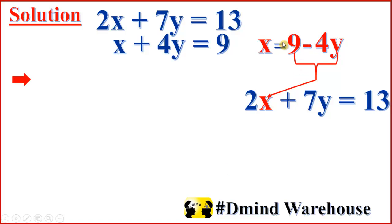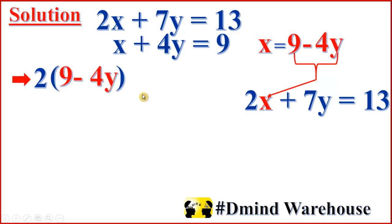Now, in place of x, we can substitute 9 minus 4y instead of x. That means 2 times (9 minus 4y), because x equals 9 minus 4y, plus 7y equal to 13.